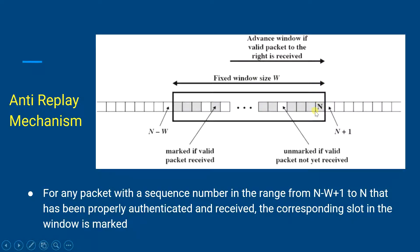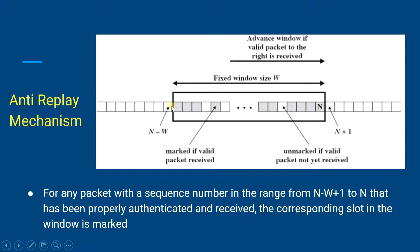The right edge of the window will represent the highest sequence number, represented as N, for a packet which is received and considered valid. For any packet with a sequence number in the range N minus W plus one to N that has been correctly received, the corresponding slot in the window will be marked. You can see the corresponding slot in the window ranging from N minus W plus one to N is marked.